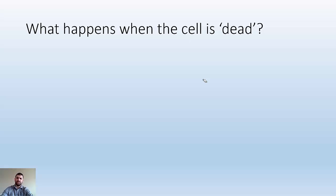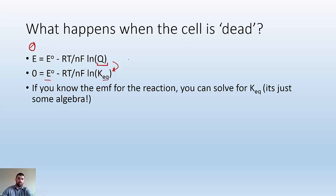What happens when the cell is dead? E equals E naught minus RT/nF ln Q. When it's dead, E has to equal 0. And when it's dead, it's at equilibrium. So Q becomes K_eq. Now I have this equation in terms of E naught and K_eq, which may be helpful if they're asking for K_eq or the EMF. It's just algebra.